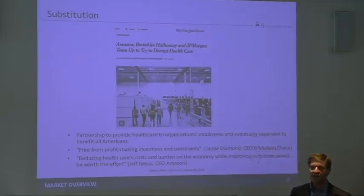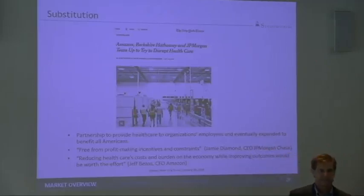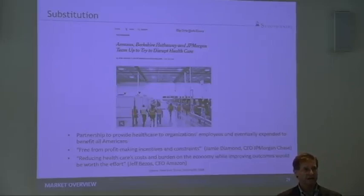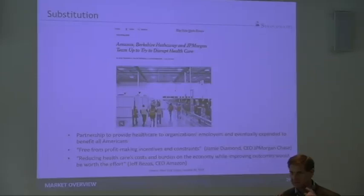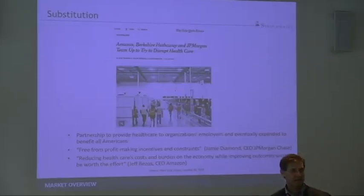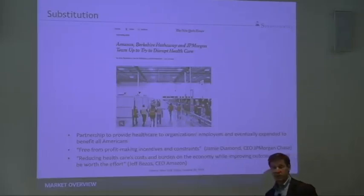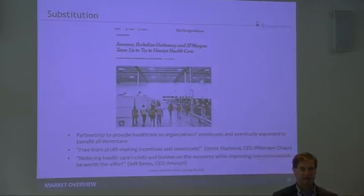Amazon, which does have a trillion dollar market cap, Berkshire Hathaway, and JP Morgan have gotten together to say, 'We're going to do things differently. We cannot — you have failed us as a healthcare system. You are failing us today. You are going to continue to fail us. We are going to do something different about it because we're paying too much.' They're going to start for their own employees, and when they're done, they'll offer their services to everybody else.